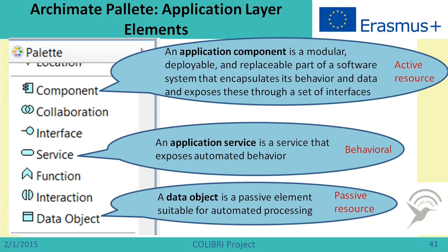If you have found all elements of the business level, it is time to proceed further. When speaking about application layer elements, we can see software components, services provided by software components, and data objects which are passive elements suitable for automated processing. Data objects usually correspond to particular business objects. The application component is an active resource because it does something, the application service is a behavioral element showing an action, and the data object is a passive resource used in different activities.